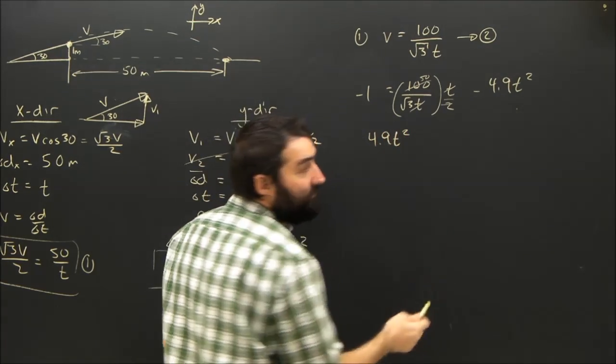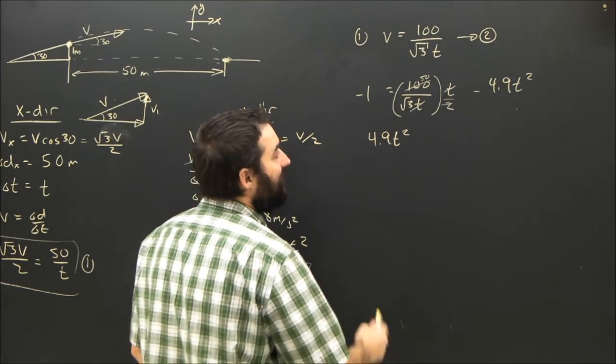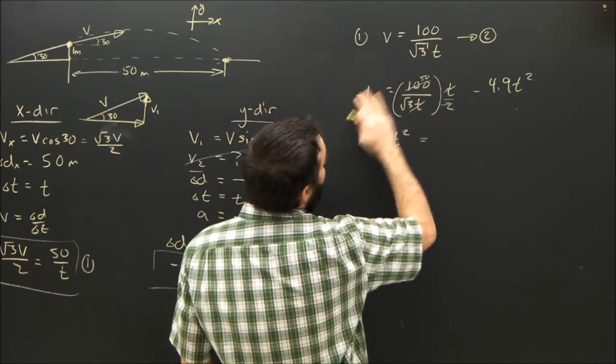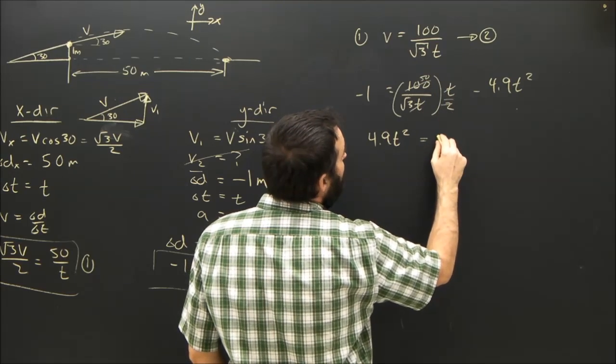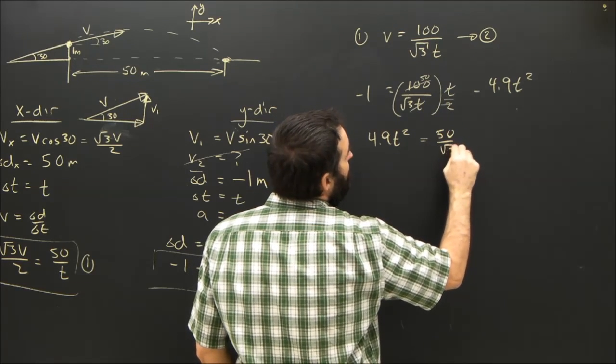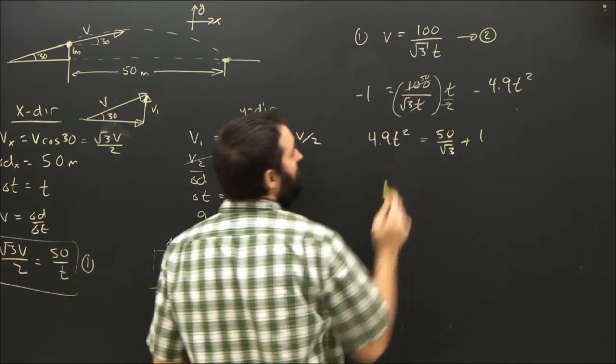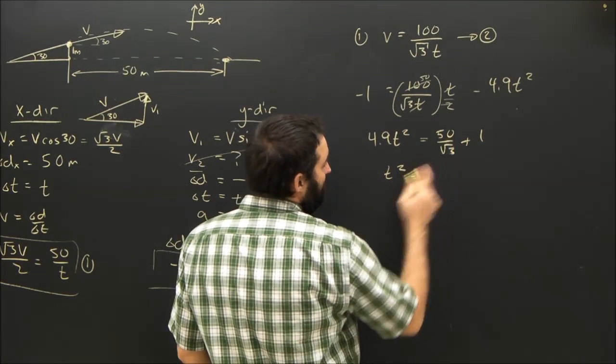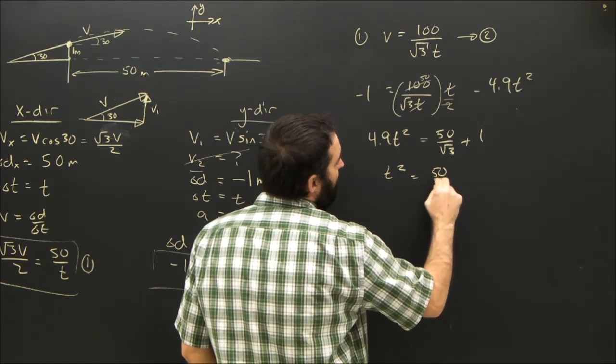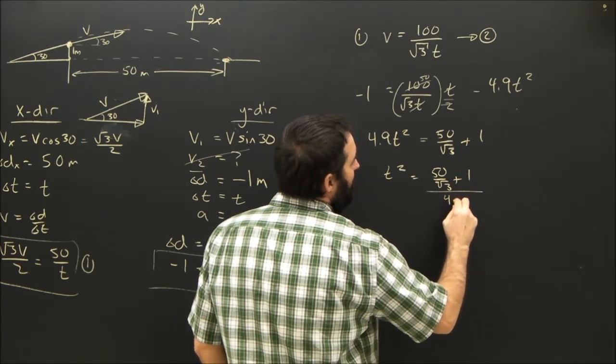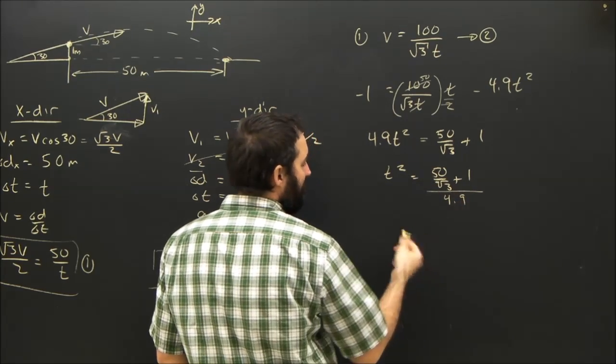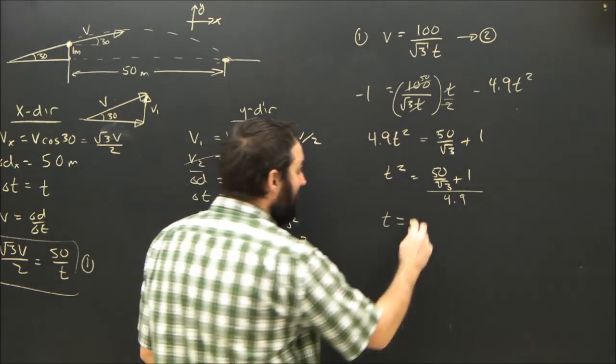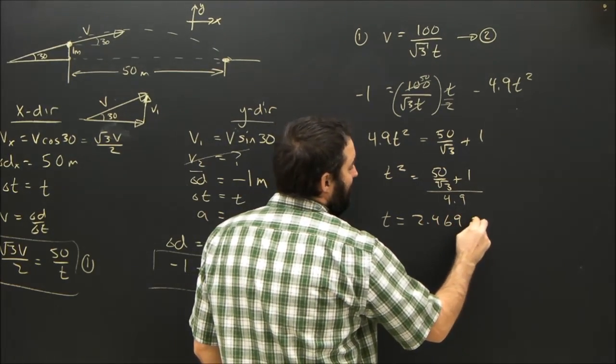Now I'm going to rearrange a few more things. So I'm doing multiple steps here. You have all the time in the world to do all the steps on paper. I'm going to move the 4.9 over, it becomes positive. I'm going to move the 1 over, it becomes positive. And then I'm going to end up with 50 over root 3 plus 1 equals 4.9 t squared. And therefore, t squared equals 50 over root 3 plus 1 all divided by 4.9. And then I take the square root and I will get a time which is equal to 2.469 seconds.